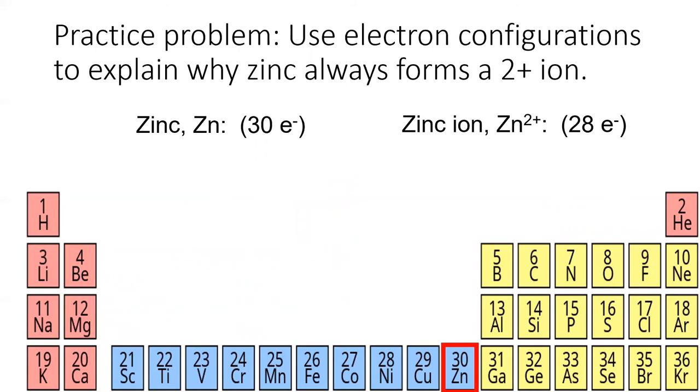All right, time for a practice problem. Use electron configurations to explain why zinc always forms a 2 plus ion. Pause the video and write the electron configuration for zinc and zinc 2 plus.